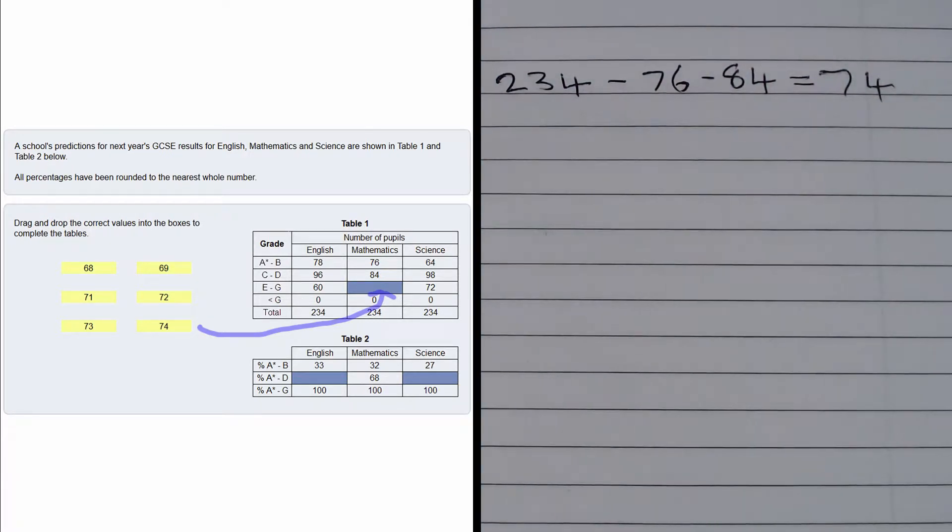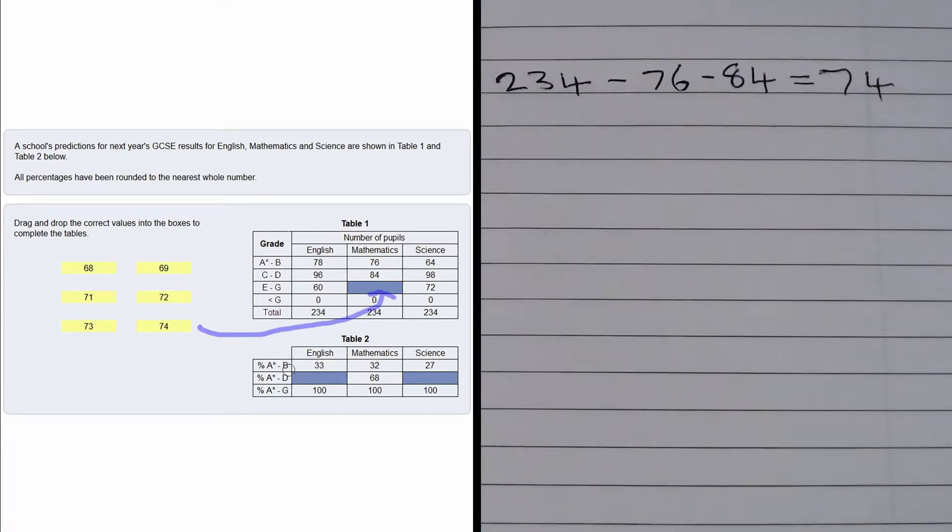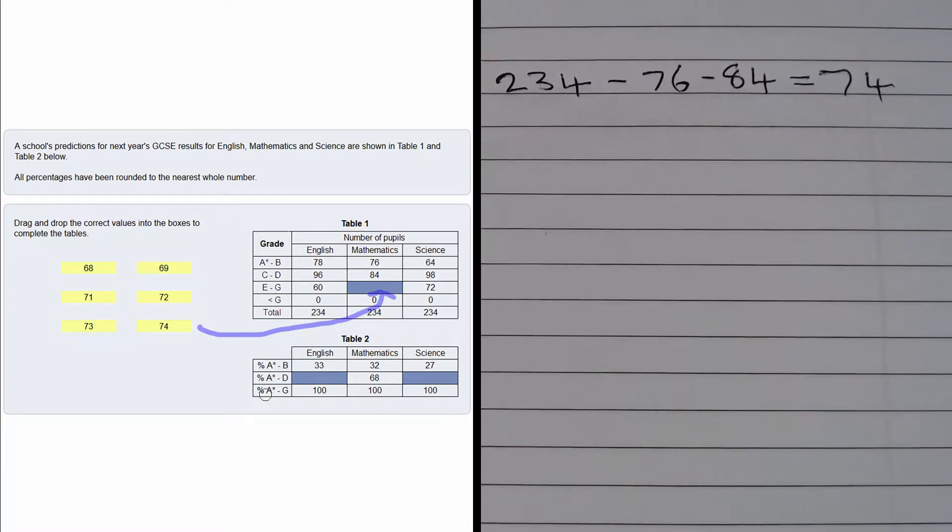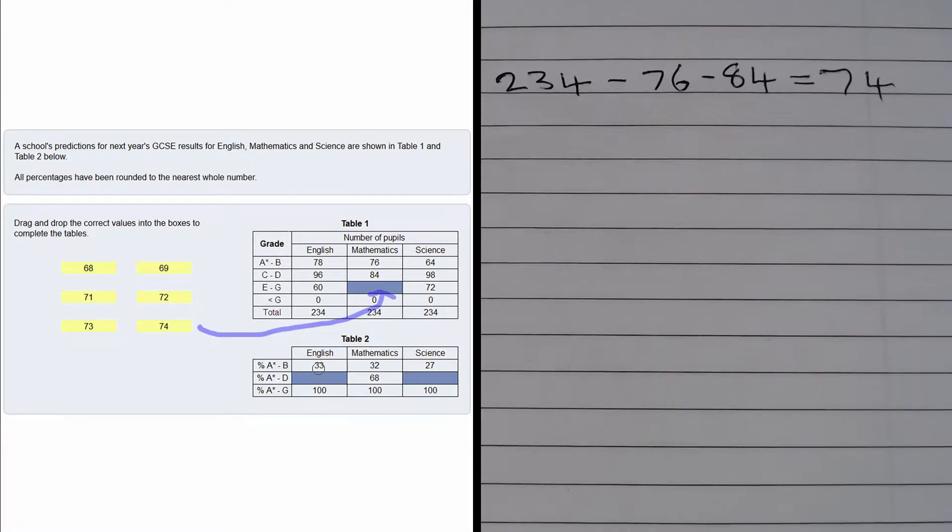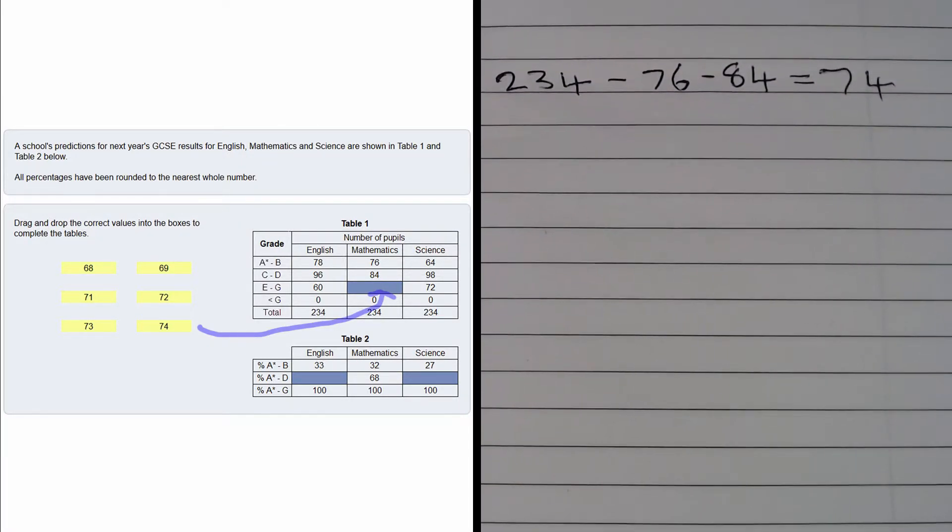This table shows percentage grades. It's a little tricky because we have A* to B, then A* to D, then A* to G. Each line includes the one before, so we can't just do a subtraction. We need to calculate these percentages.